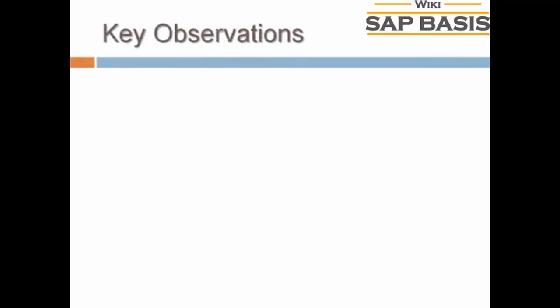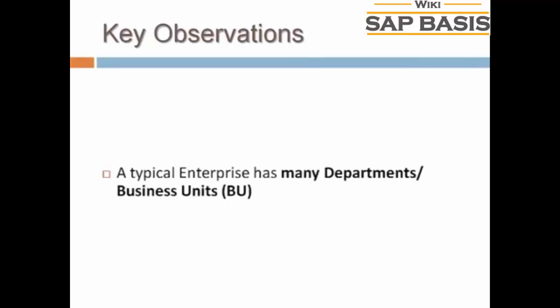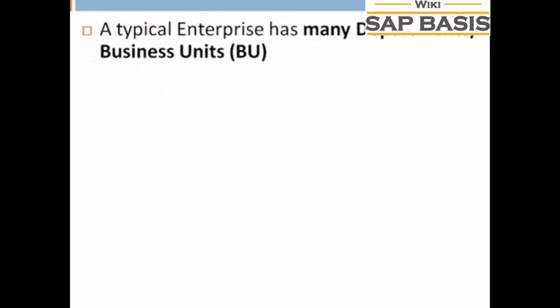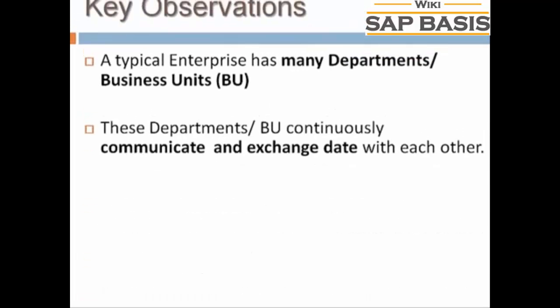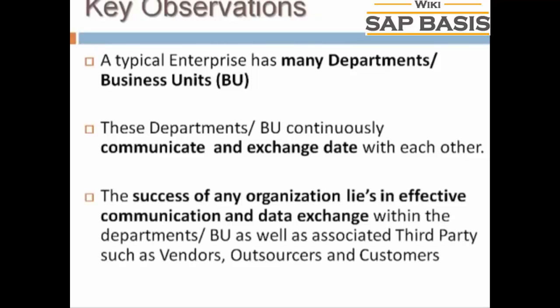Some key inferences one could derive from the scenario: a typical enterprise has many departments or business units. These departments continuously communicate and exchange data with each other. The success of any organization lies in its effective communication and data exchange within these departments, as well as associated third parties such as vendors, outsourcers, and customers.